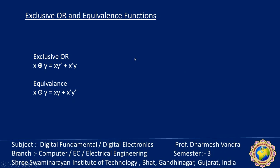In the exclusive OR gate, input combinations 0,1 and 1,0 produce output 1, while for the equivalence gate, combinations 0,0 and 1,1 produce output 1. Both functions are complements of each other. The two operations are complement to each other and are both commutative and associative.